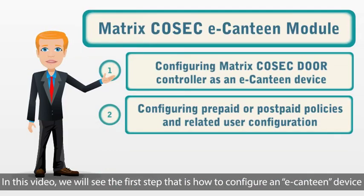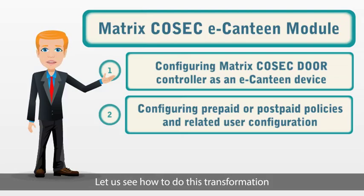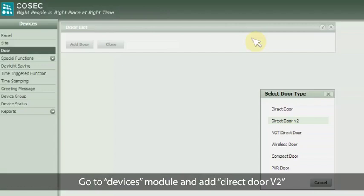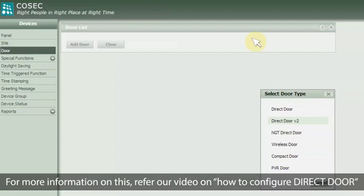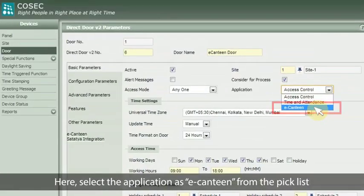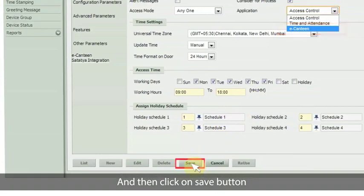In this video we will see the first step — how to configure an e-canteen device. Any Cosec door controller can be transformed to serve dedicatedly for e-canteen purpose. Go to the Devices module and add Direct Door V2. For more information on this, refer to our video on how to configure Direct Door. Here, select the application as e-canteen from the pick list, and then click on the Save button.